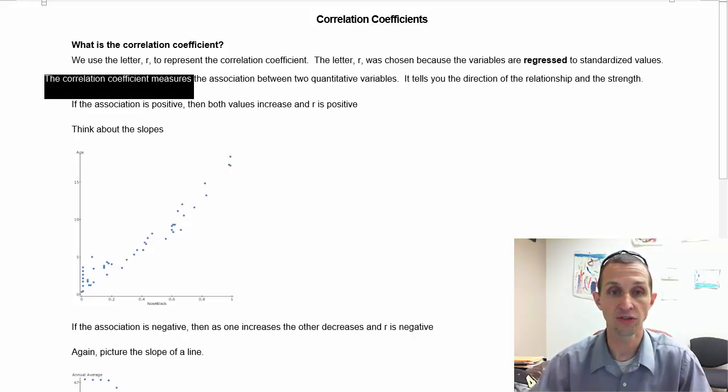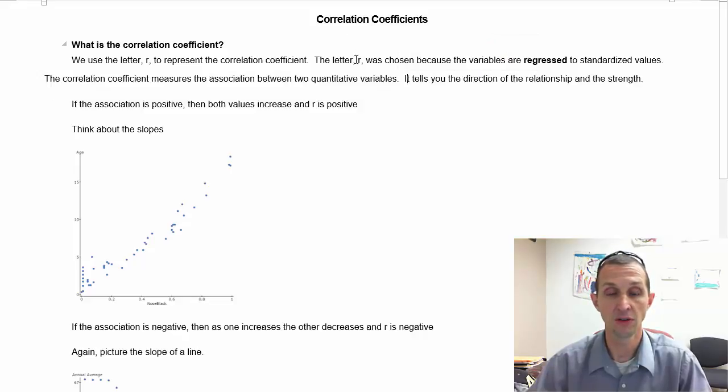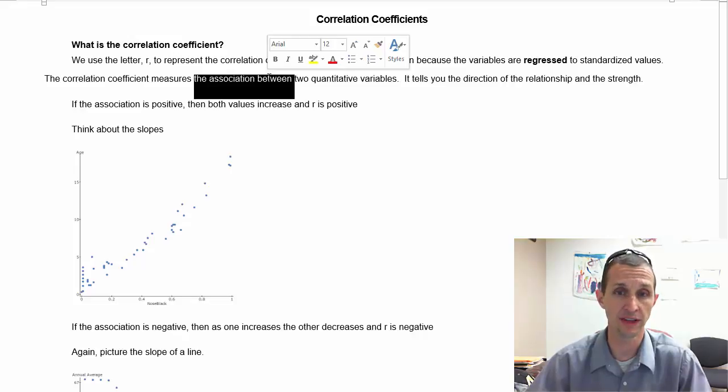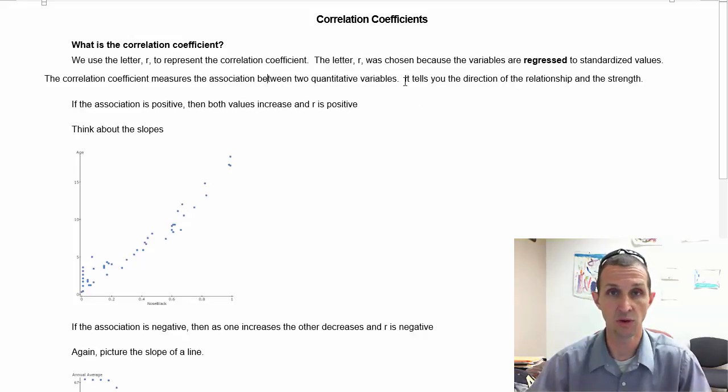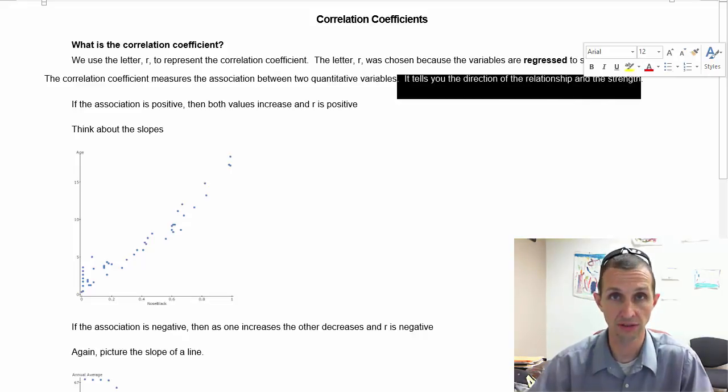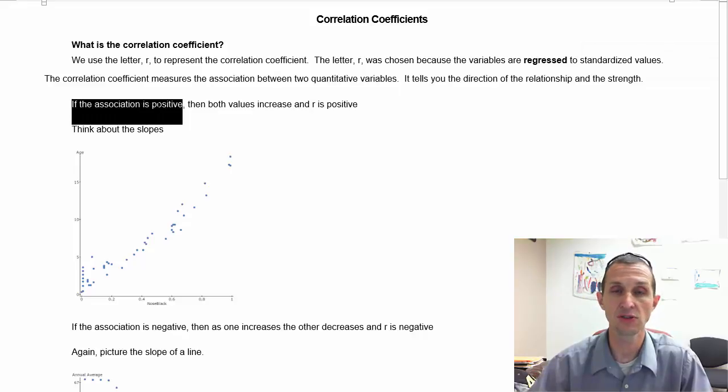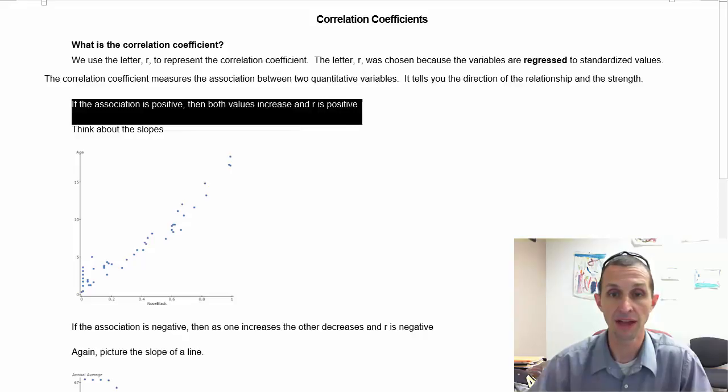The correlation coefficient actually measures the amount of association between two quantitative variables - how well they are associated, how strongly they are associated is what R tells you. It tells you the direction of the relationship, both positive and negative, and the strength from zero to one absolute value. If the association is positive, then both values increase and R is positive.